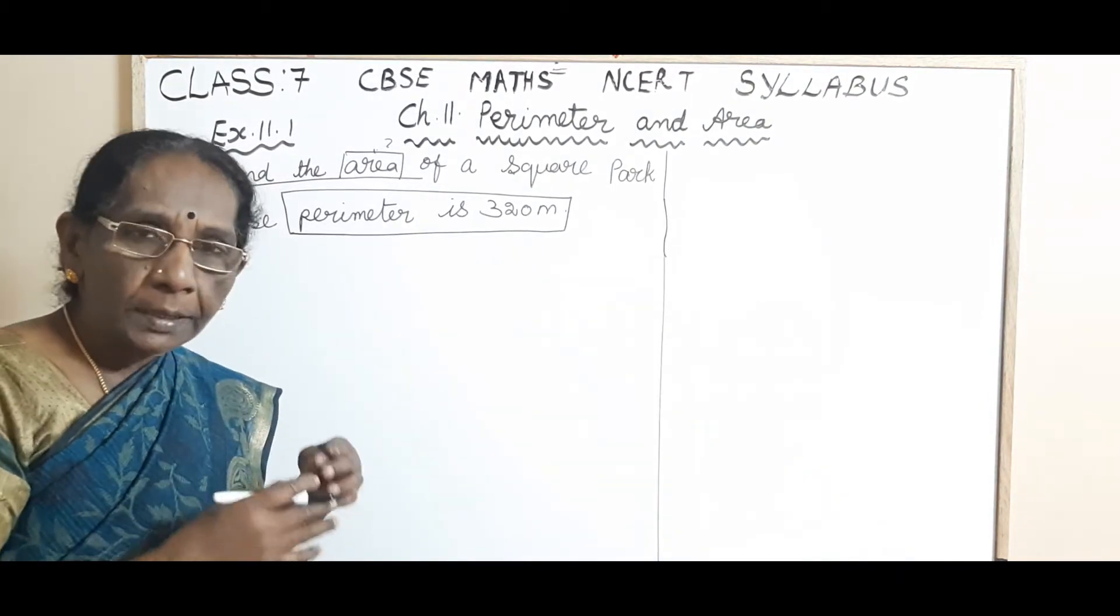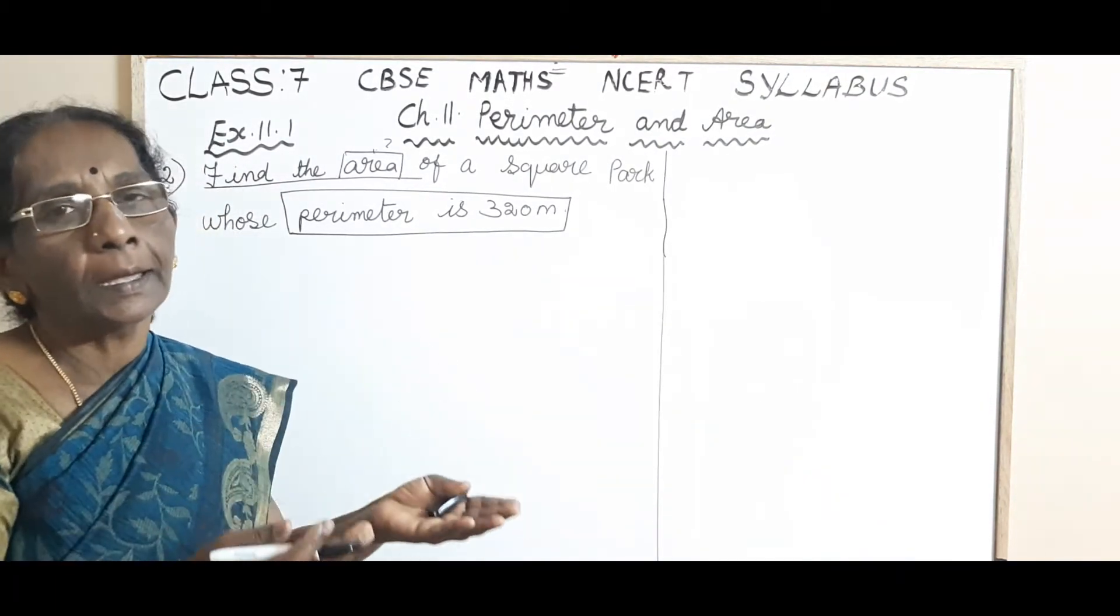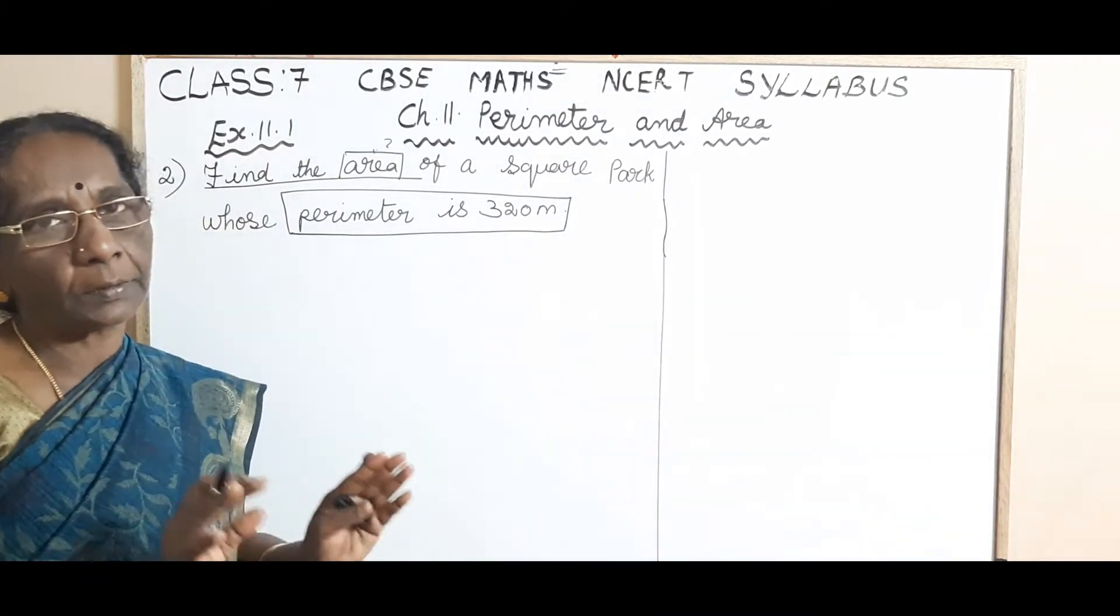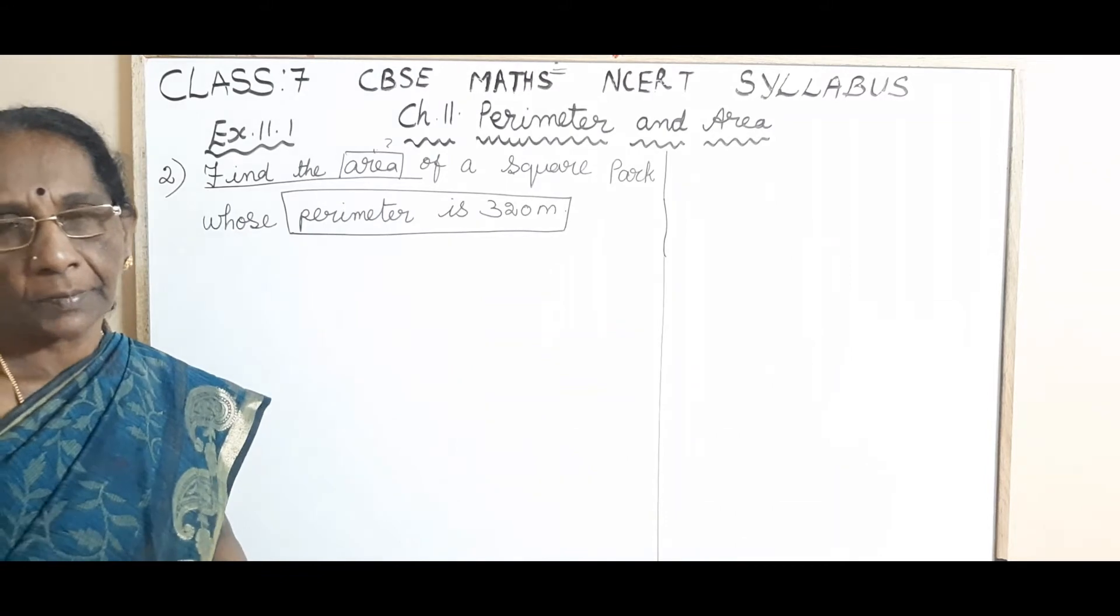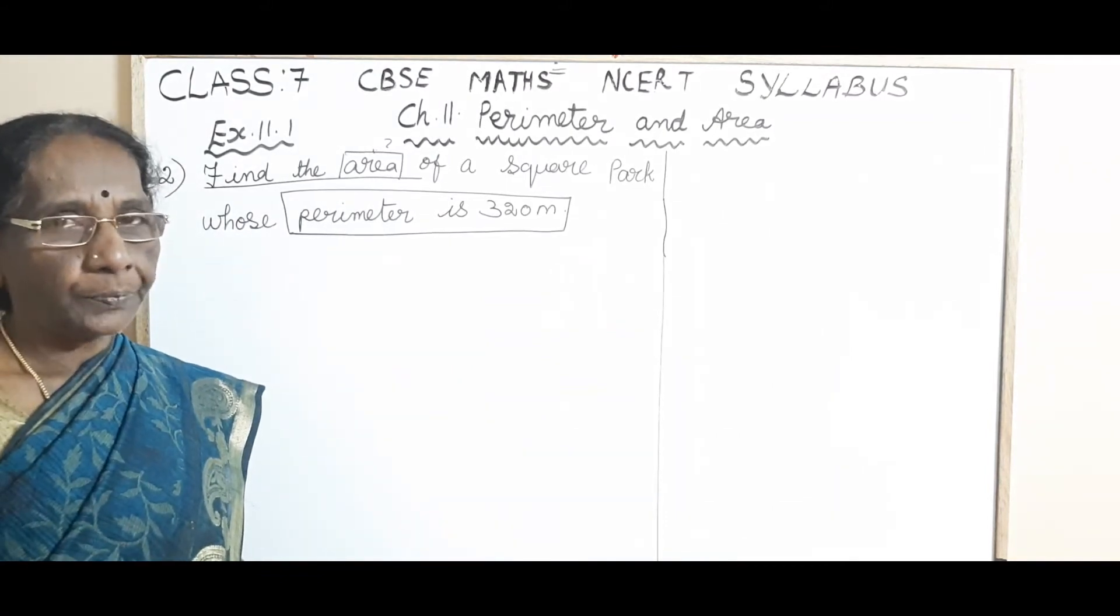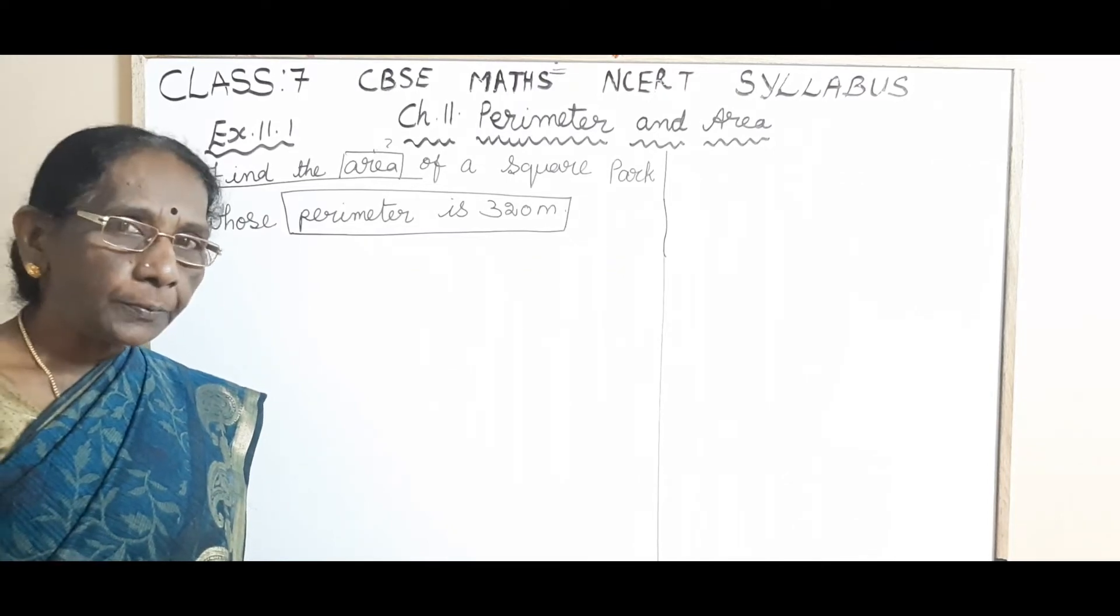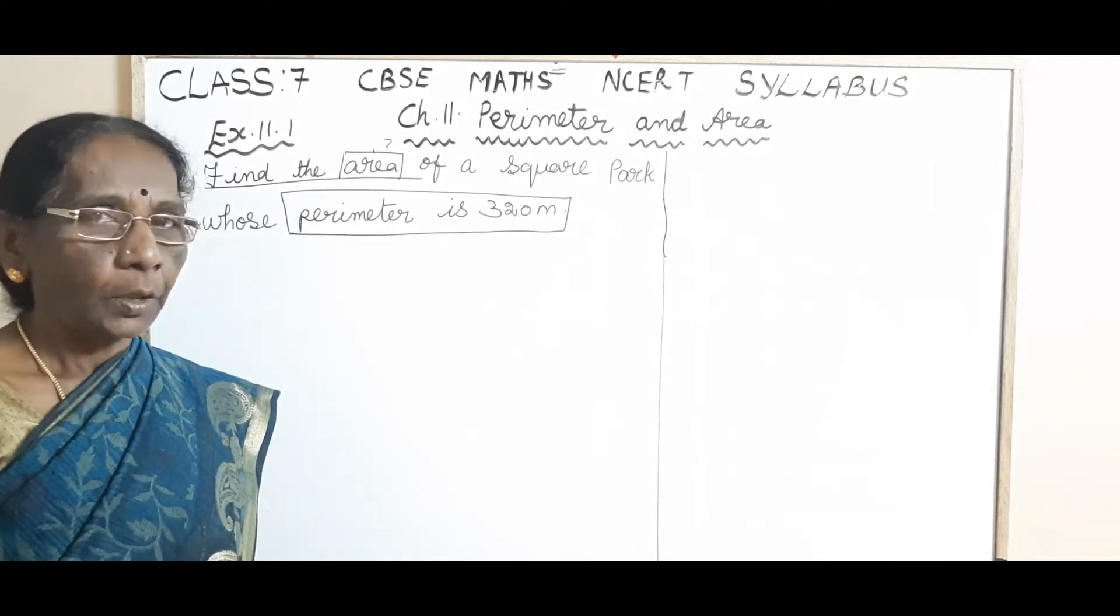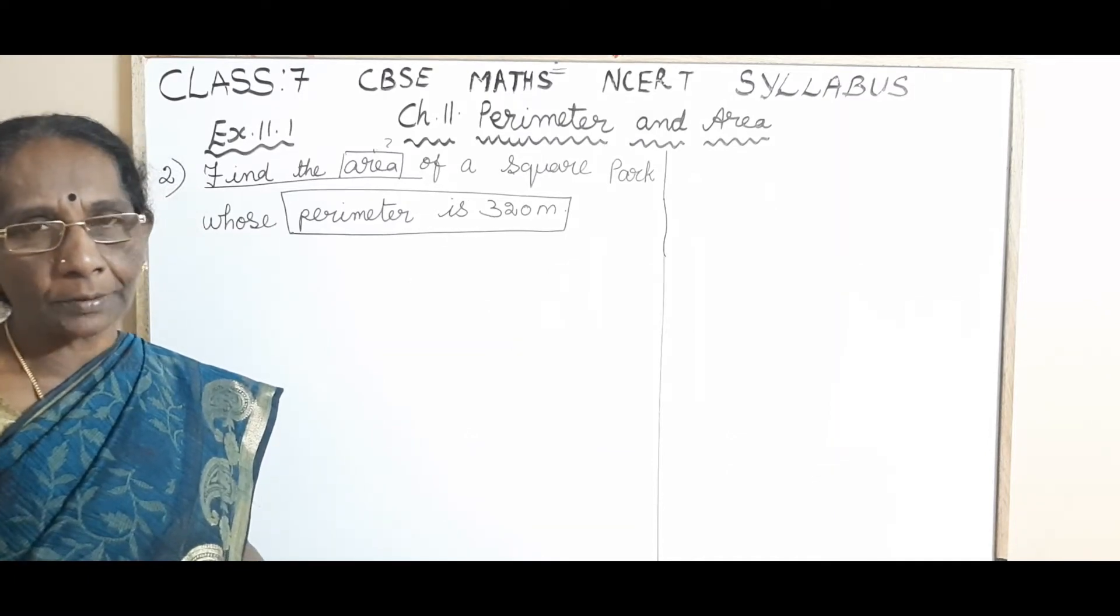So using the given information, we have to find the area. The given information is what? Perimeter of the square park. So how to do? First step. Using the formula for the perimeter of the square, you can find the side of the square.